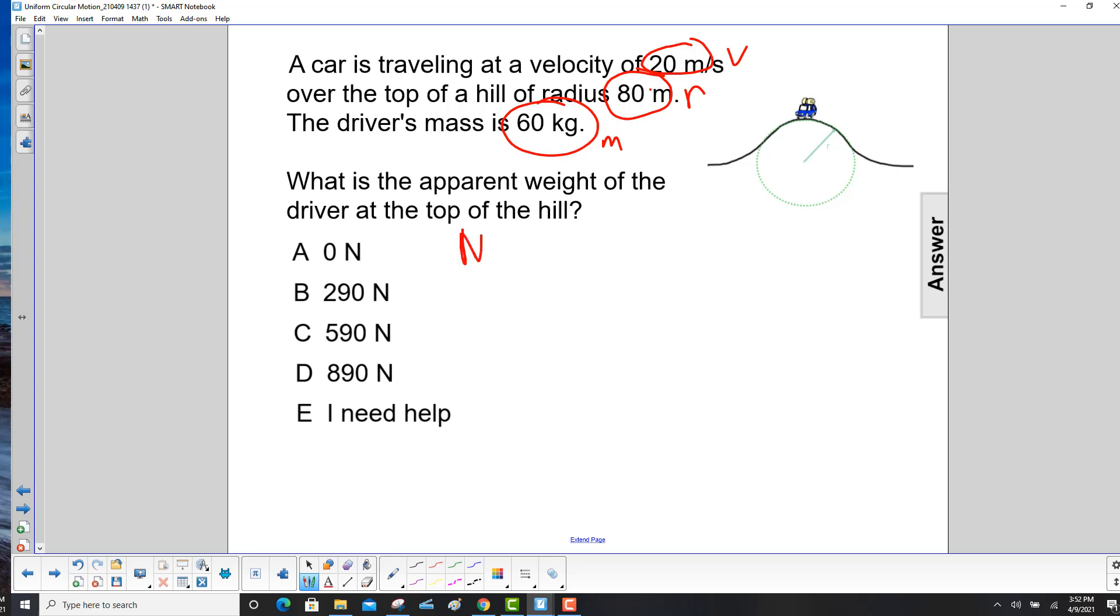Well, another name for apparent weight is the normal force. So if we draw a free body diagram here, we have mg down pointing towards the center of this little hill, and we have the normal force up.